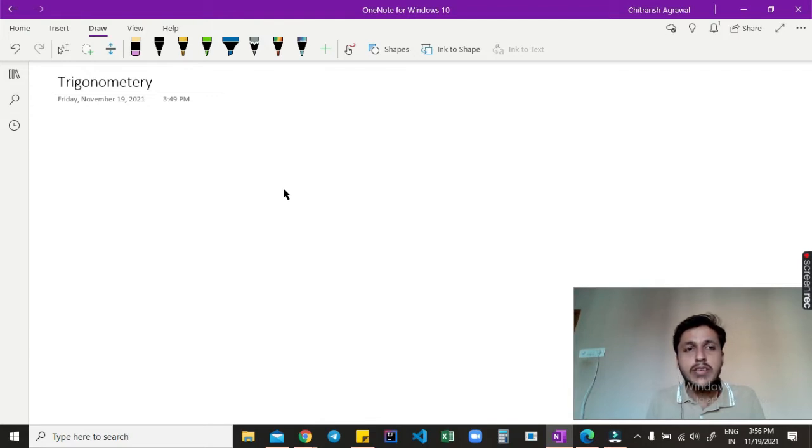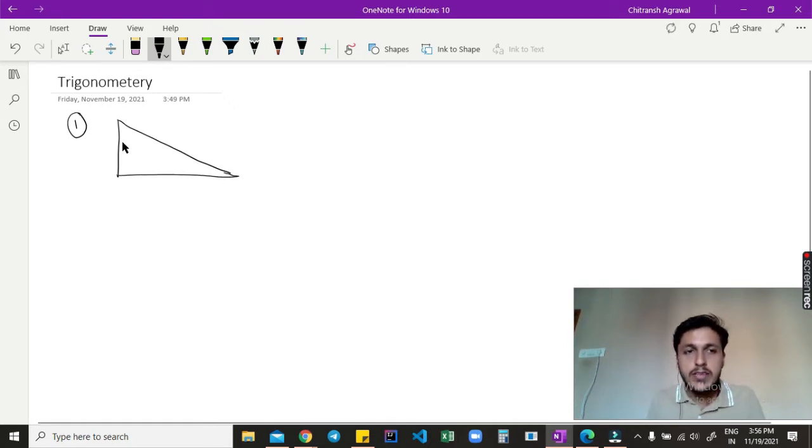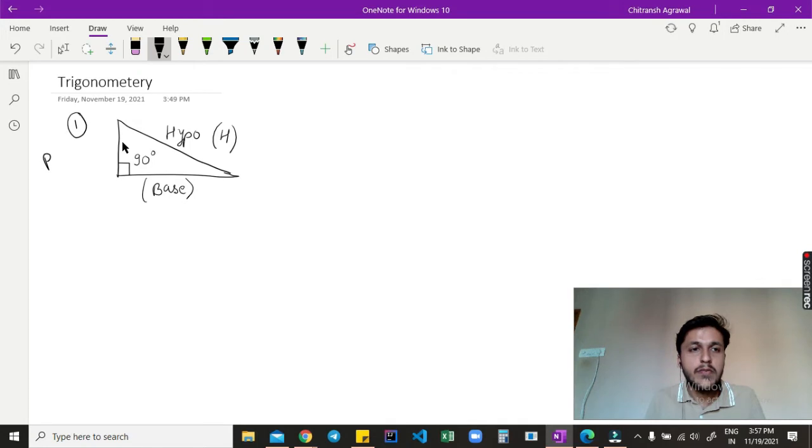When trigonometry comes, the first thing which should come to mind is a right angle triangle. A right angle triangle is something which has one of its angles as 90 degrees. The side which is opposite to this 90 degree angle is called hypotenuse or H. One side is called base, and the other side is called perpendicular or P.